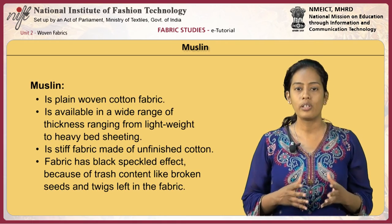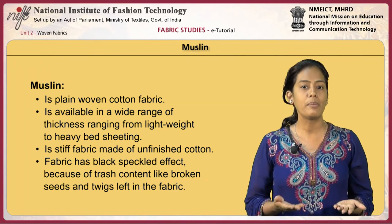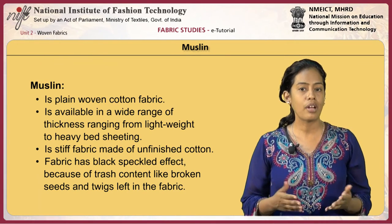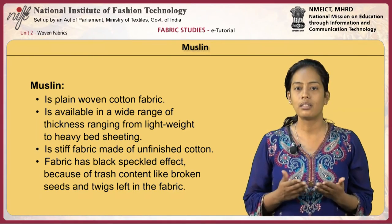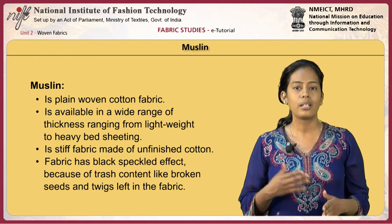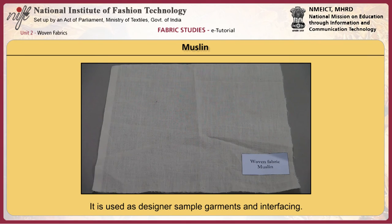Muslin is a plain woven cotton fabric available in a wide range of thickness, from light weight to heavy bed sheeting. It is a stiff fabric made of unfinished cotton. The fabric has a black speckled effect because of trash content like broken seeds and twigs left in the fabric. Unfinished muslin is widely used as designer sample garments and interfacing. When processed and free from starch and oil, the fabric is soft and used for apparel like dresses and home furnishings like sheets and upholstery.